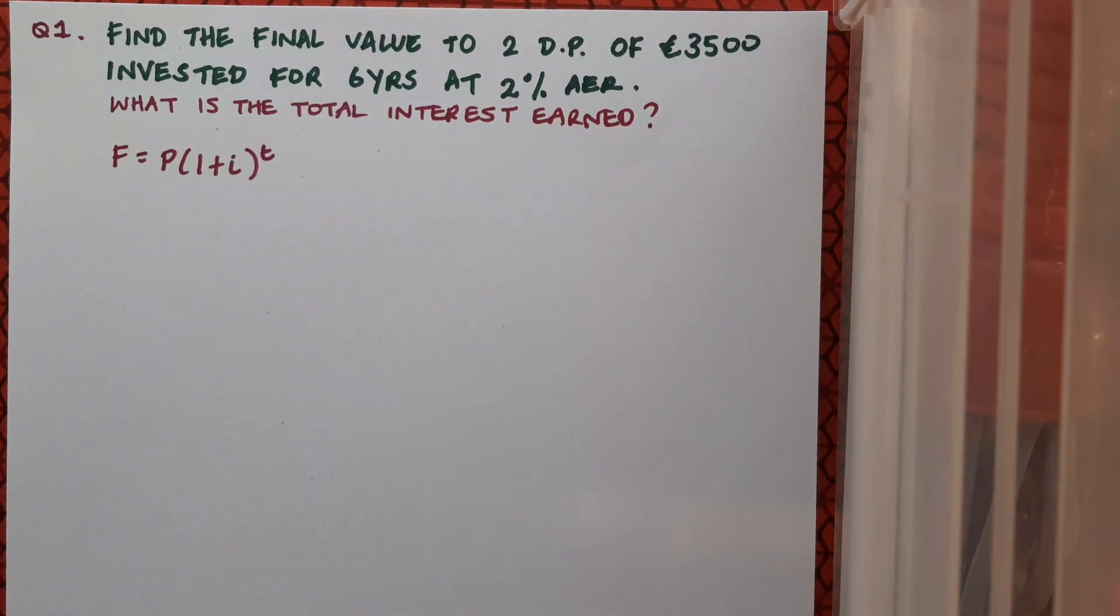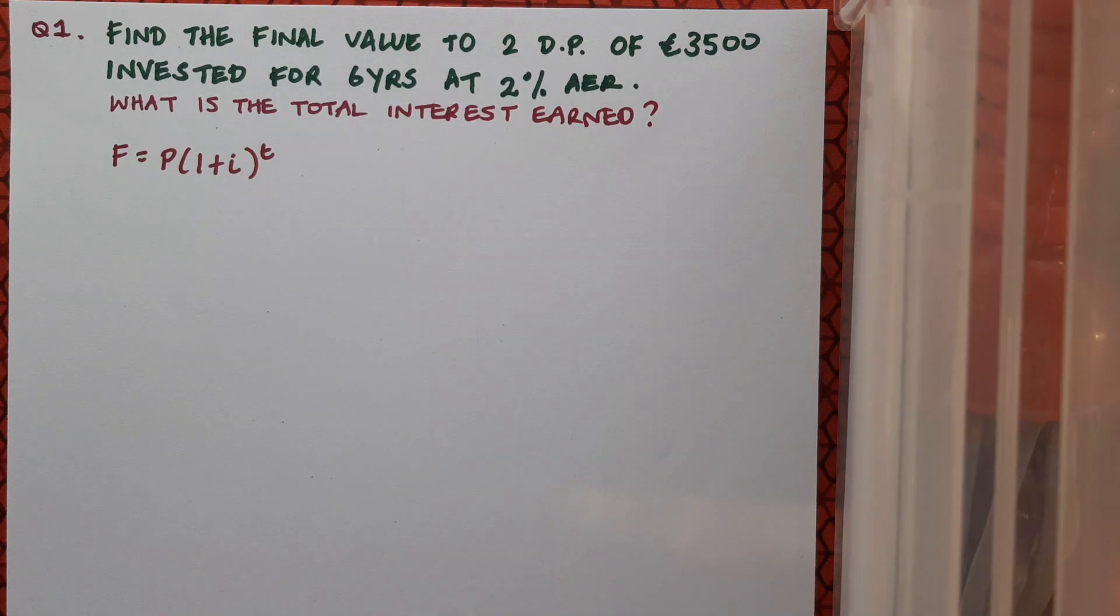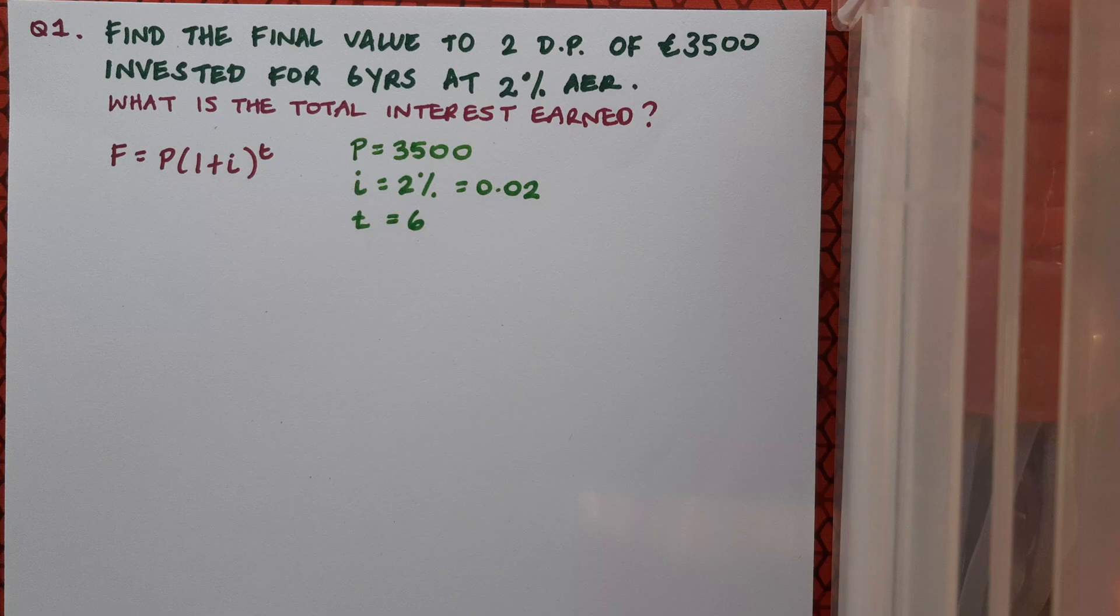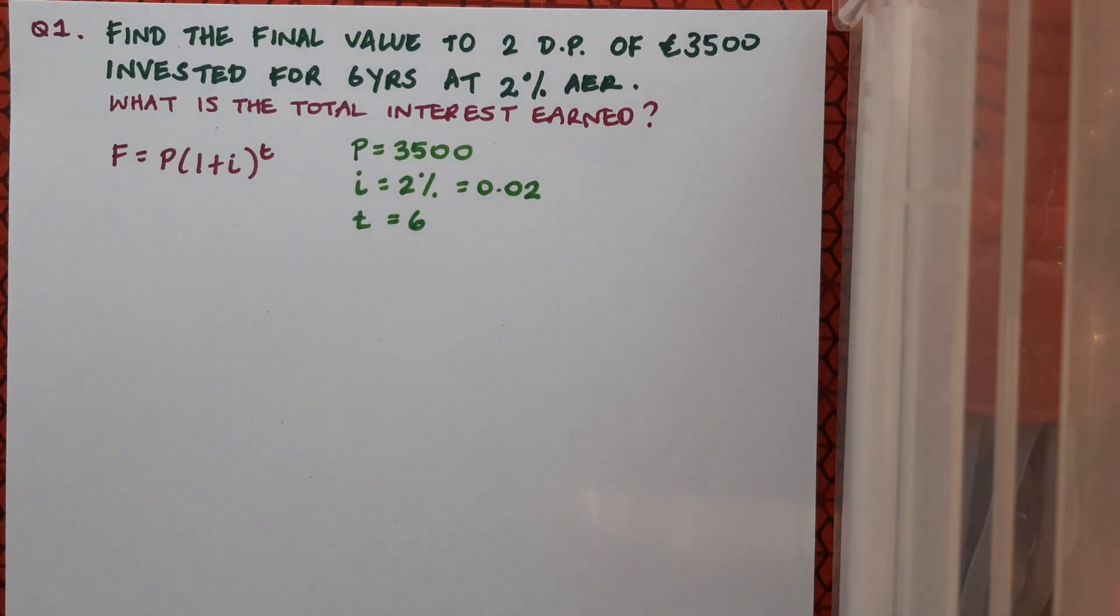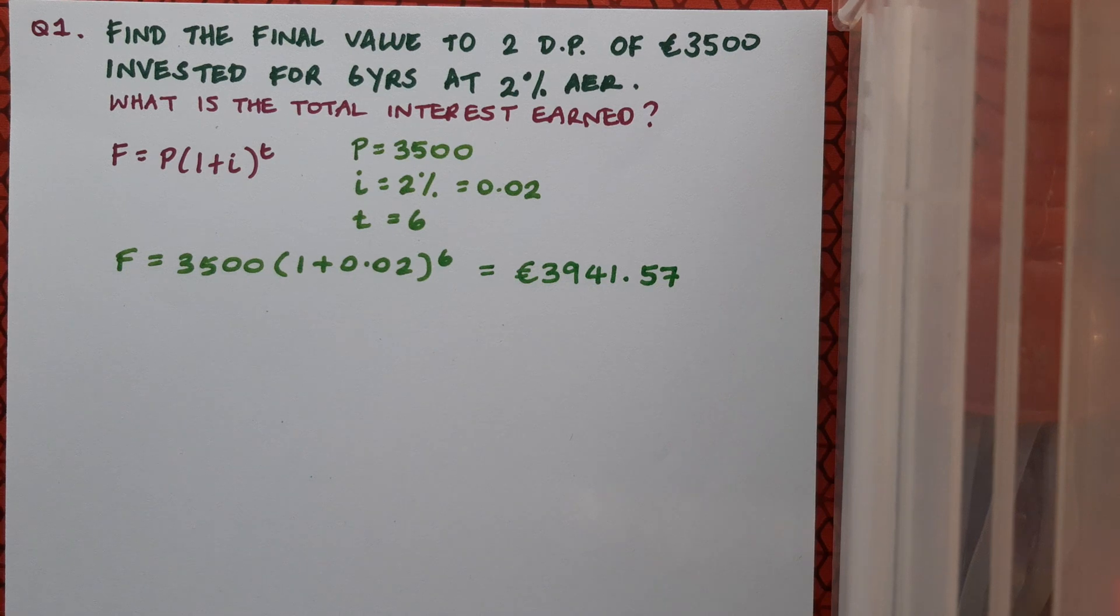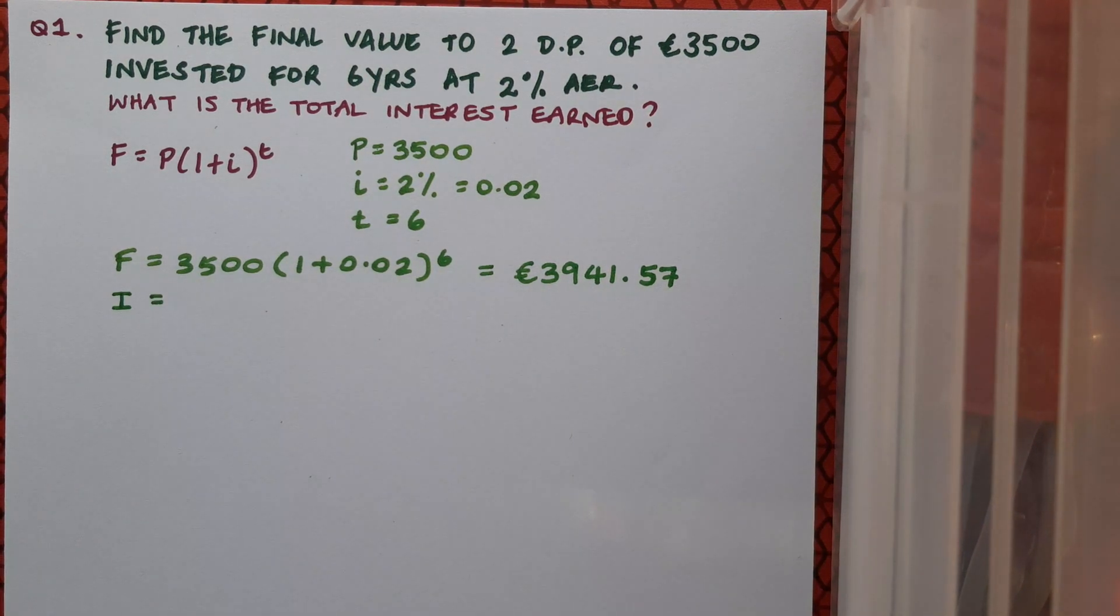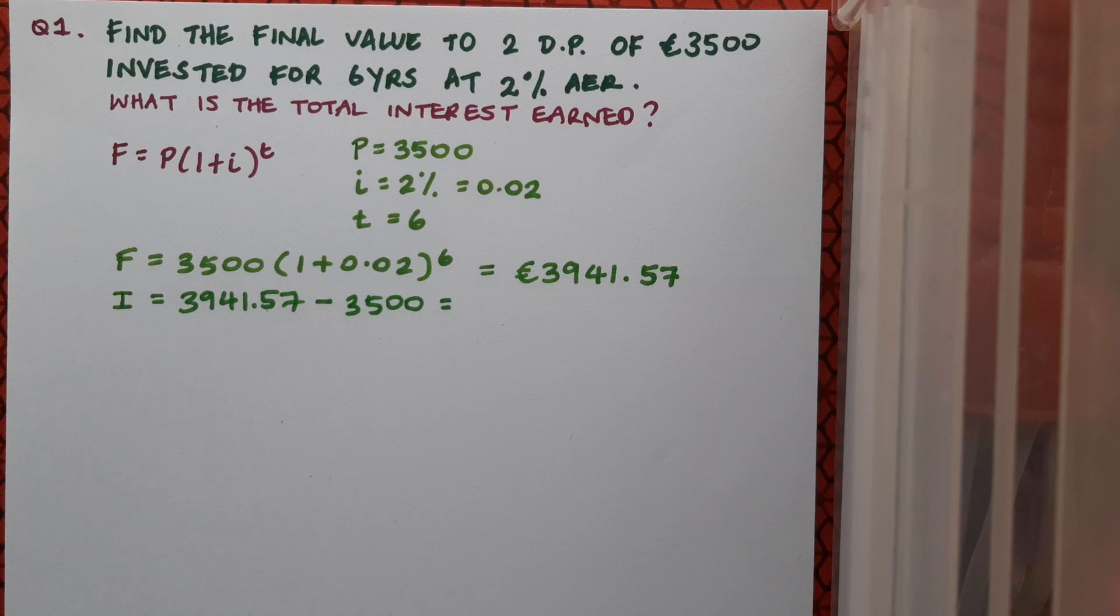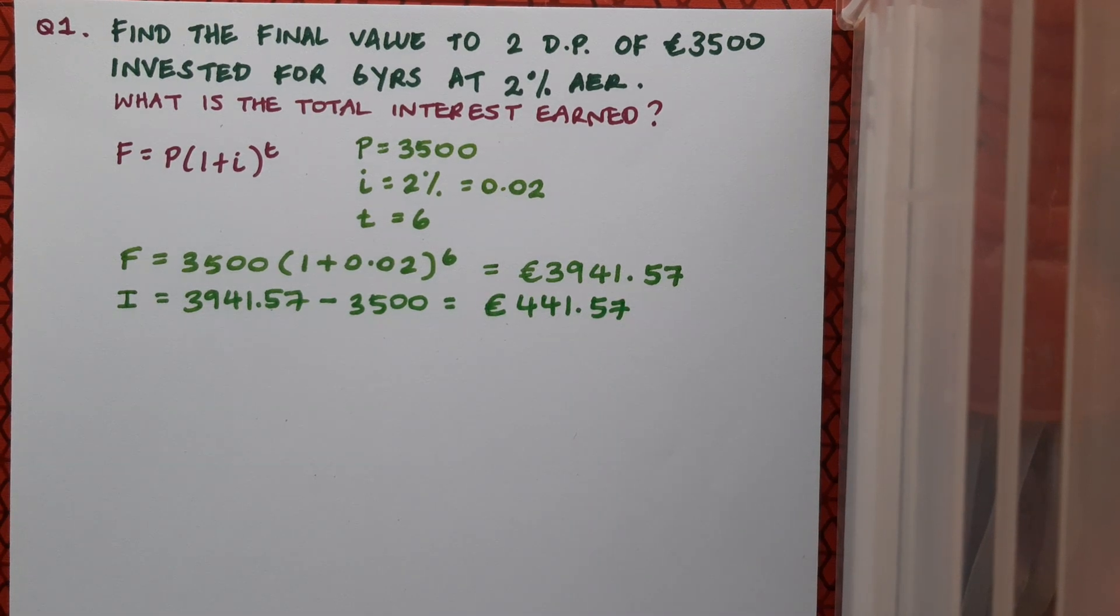So I'm going to start by writing my formula down: F equals P bracket one plus i to the power of t. And then I'll note the values that I have in the question. There's my three values for P, i, and t and I'll fill those in. And in this case my final value is €3941.57. I want to calculate the interest earned as well so I'll calculate F minus P and it's €441.57.